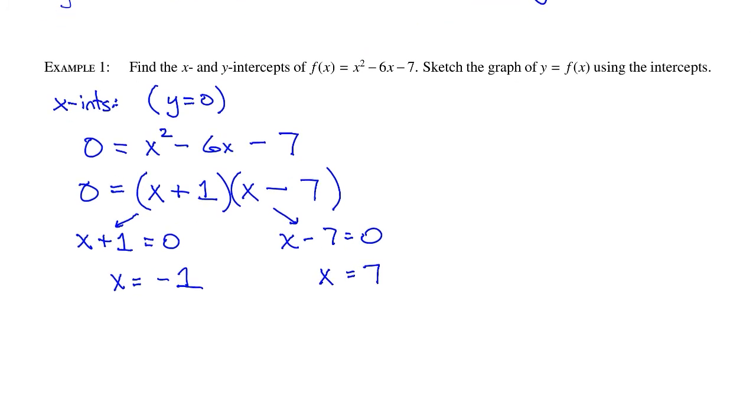So we get x = -1 and x = 7. And those are the x-intercepts. And in some cases, you'll need to write these as points. So the point is (-1, 0) because the y is 0, and (7, 0).